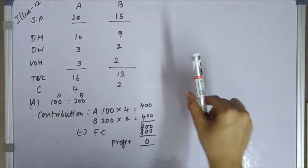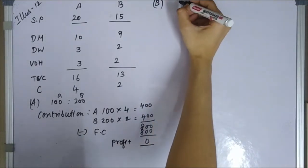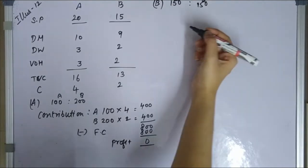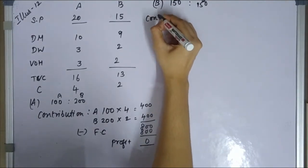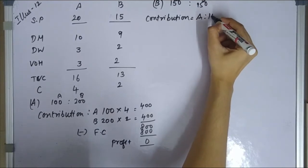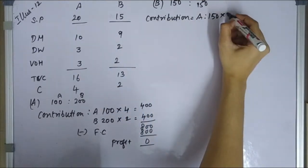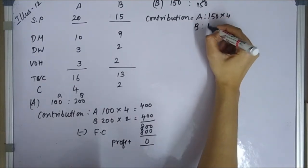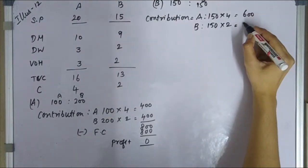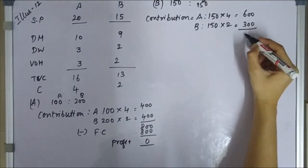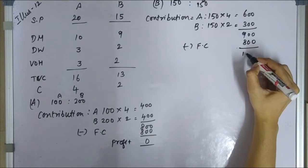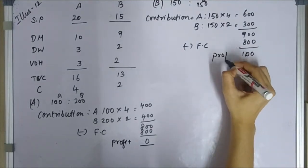Sales Mix B: 150 units of product A and 150 units of product B. Contribution from A equals 150 into 4 equals 600 rupees. Contribution from B equals 150 into 2 equals 300 rupees. Total contribution is 900 rupees. Less fixed cost of 800 rupees. Profit is 100 rupees.